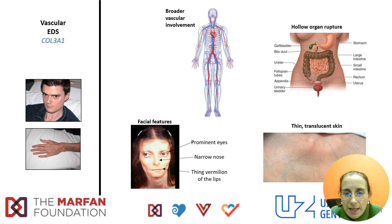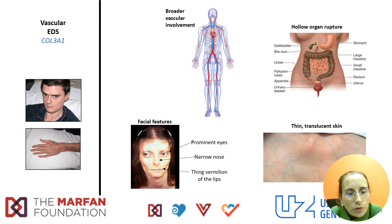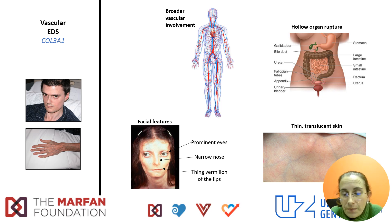Patients with vascular Ehlers-Danlos syndrome have a very distinctive phenotype. Their facial features include prominent eyes, a narrow nose, and thin vermillion of the lips. They may also have thin and translucent skin. In contrast to Loeys-Dietz and Marfan syndrome, they do not always present with aortic dilatation, but may have aneurysm and dissection of peripheral arteries, hollow organ rupture, and children may present with pneumothorax.